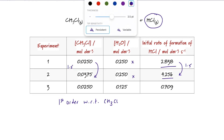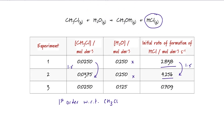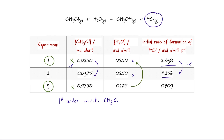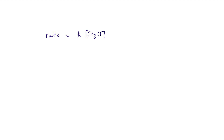Now let's look at how the concentration of water affects the rate. I compare experiments one and three, where the starting concentration of chloromethane remains the same. Moving from experiment three to experiment one, the concentration of water has doubled and the initial rate has quadrupled. So the reaction is second order with respect to water. Writing the rate equation: rate equals k[CH3Cl][H2O]².